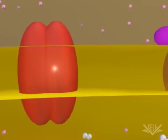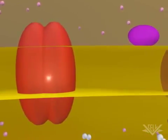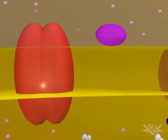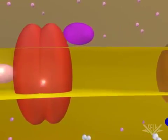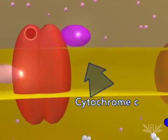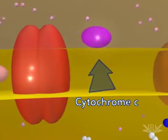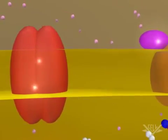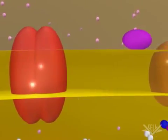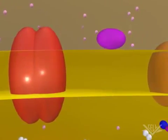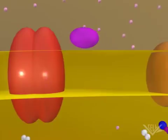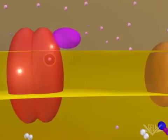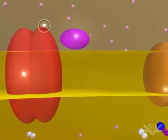Ubiquinone is called a mobile transfer molecule because it moves the electrons to the cytochrome BC1 complex. Each electron is then passed from the cytochrome BC1 complex to cytochrome C. Cytochrome C accepts each electron one at a time, and one hydrogen ion is pumped through the complex as each electron is transferred.